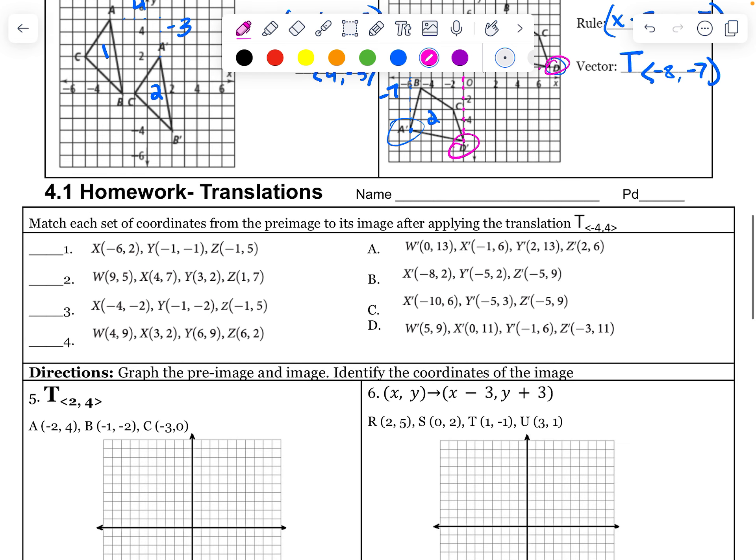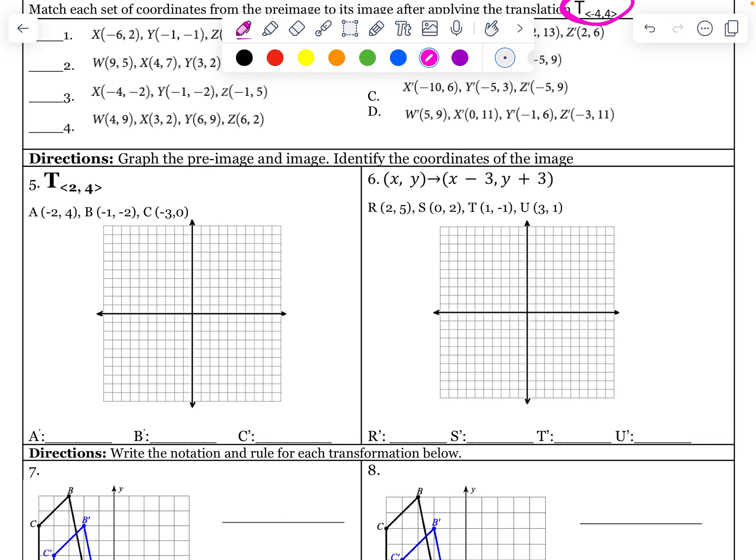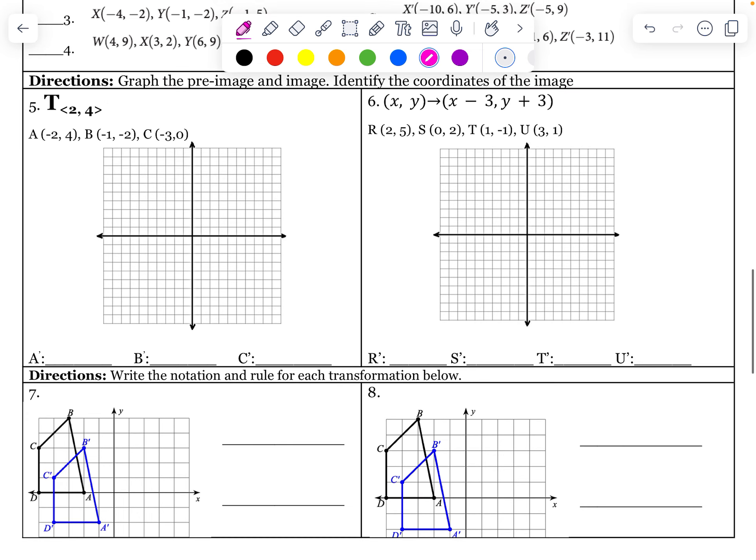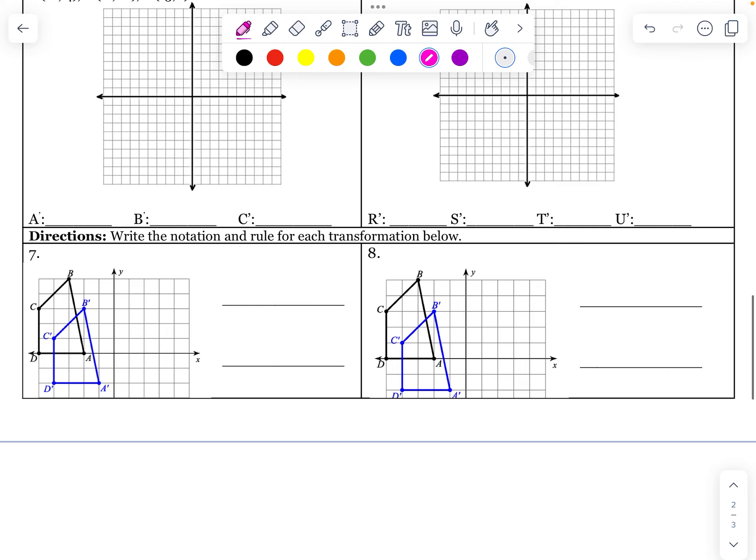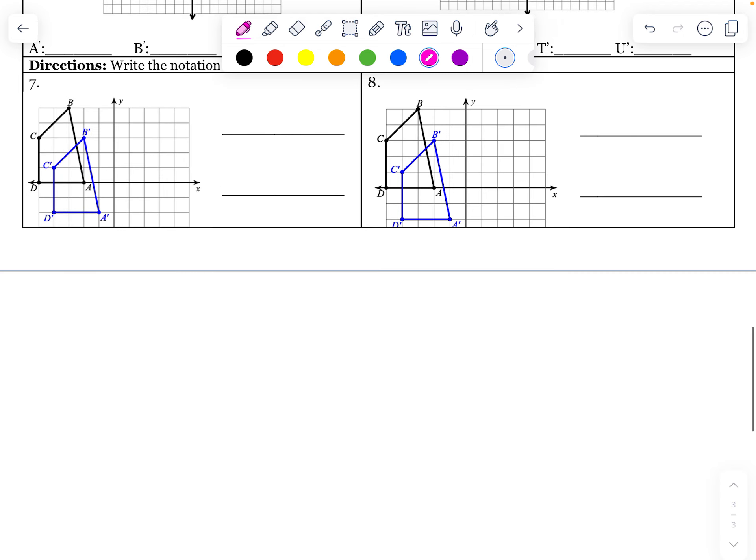Match each set of coordinates from its pre-image to its image after applying the translation. Each one of these is a different figure and then that translation happened to it. Do it to these. Without even drawing it, you can figure out what their new points are going to be. Graph the pre-image and the image. I will go ahead and graph that image for you so that you don't have to do it. And then just graph the pre-image. And then write the notation and the rule for both. Hope that makes sense. Good luck. Bye.